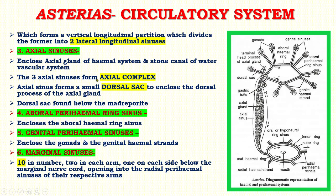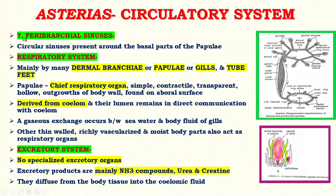The three axial sinuses form the axial complex. The axial sinus forms a small dorsal sac to enclose the dorsal process of the axial gland. The dorsal sac is found below the madreporite. Fourth is the aboral perihemal ring sinus, which encloses the aboral haemal ring sinus. Fifth are the genital perihemal sinuses, which enclose the gonads and the genital haemal strands. Sixth are the marginal sinuses, ten in number — two in each arm, one on each side below the marginal nerve cord, opening into the radial perihemal sinuses. Seventh are the peribrachial sinuses, circular sinuses present around the basal parts of the papuli.